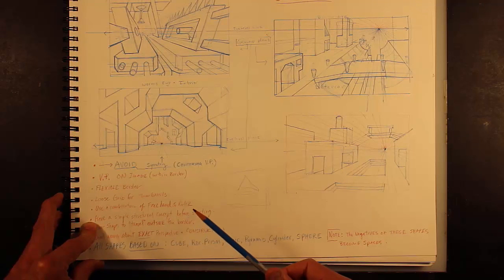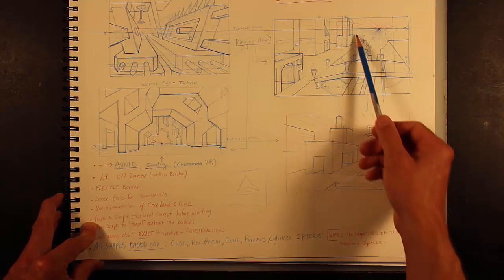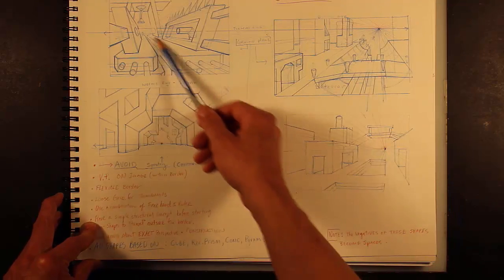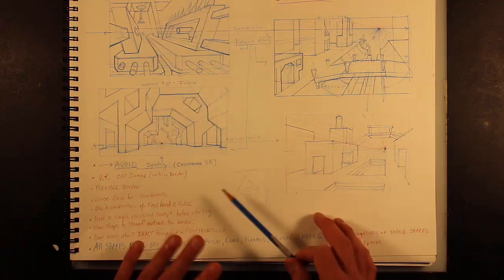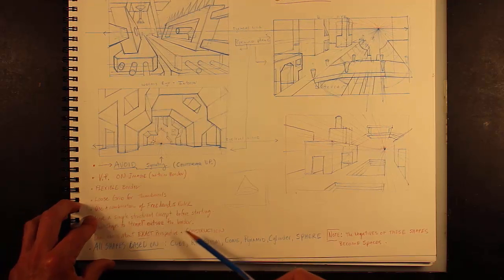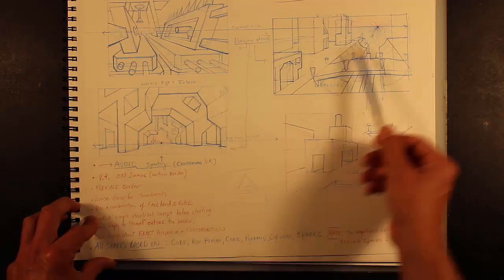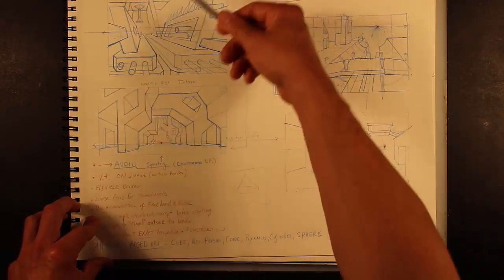Have a simple structural concept before starting. Is it based on a rectangular prism? Is it based on a cylinder? A simple motif is the beginning. Always allow shapes to travel outside the border. This building going in this way, this way. These coming out this way, this way. This going up through there.